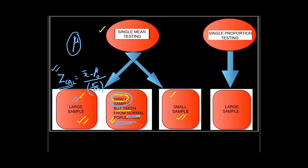At the same time if this was single mean testing but for small sample, then we will be using something called the t distribution. We will use t calculated. And in single proportion, in proportion the sample will be always kept large so it will be again z calculated but the formula is different. That we will check in the next video.